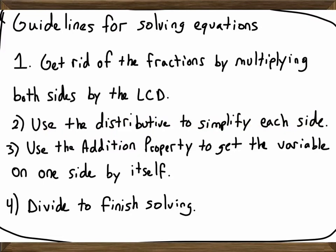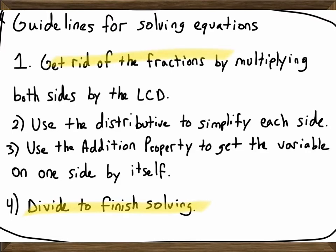Once we've simplified, we'll be down to an equation that has a number term and a variable term on both sides. We then use the addition property to get the variable onto one side by itself. Then we finish off by dividing — although sometimes we may end up using that reciprocal thing. But if we get rid of the fractions at the start, that actually won't even be an issue. So these are the steps to guide us as we work with a fractional equation. Let's get into our next example.